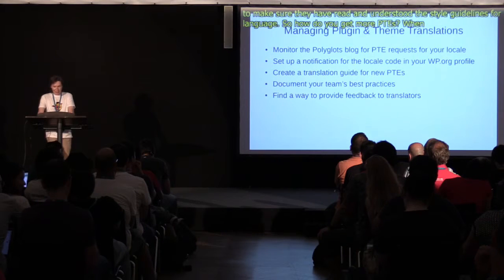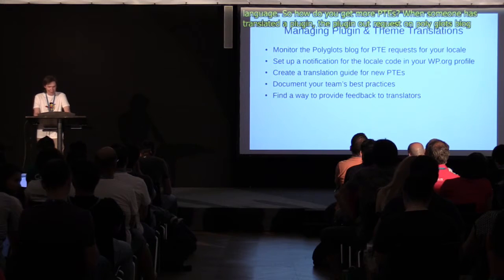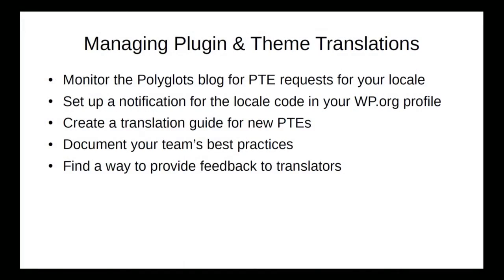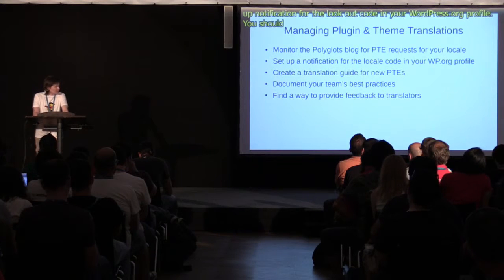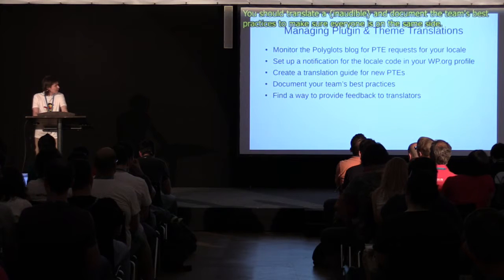How do you get more PTEs? When someone has translated a plugin, the plugin author posts a request on the Polyglots blog to assign that person as a PTE for their plugin. You should monitor those requests, check the strings, and if everything is okay, add that translator as a PTE. If there's an issue, let them know what it is and how to fix it. You don't have to monitor the Polyglots blog manually — you can set up a notification for the locale code in your WordPress.org profile. You should create a translation guide to refer new PTEs to and document your team's best practices. Currently there's no way to reject a string with feedback in the system, so you have to find another way to contact the translator.